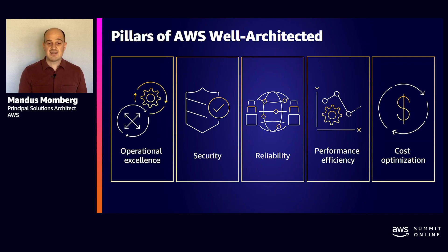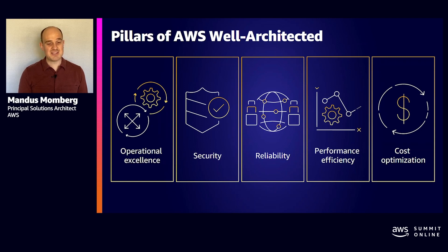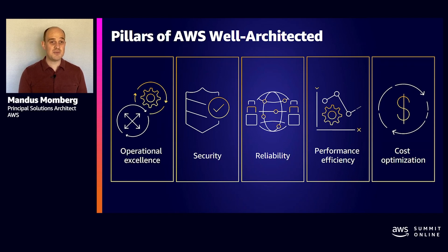If you neglect any of these five pillars, it can become a challenge to build a system that delivers functional requirements and meets your business requirements, and ultimately ends up disappointing your customers. But when you incorporate these pillars, it will help you produce a stable and efficient workload that allows you to focus on the functional requirements and the value of your product for your customers.